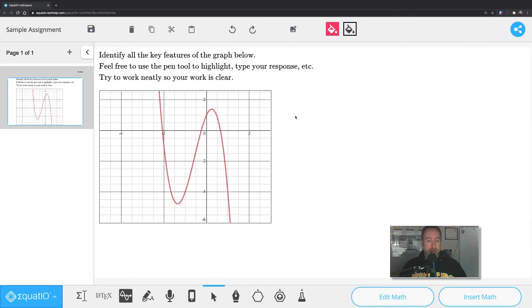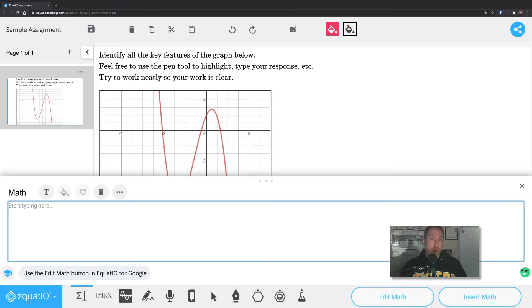And if all you have is a mouse or a trackpad, you can still use this tool really well. It just gets a little bit messy when you try to write stuff. Which is why the first tool in the toolbar at the bottom, the equation editor, is super helpful.